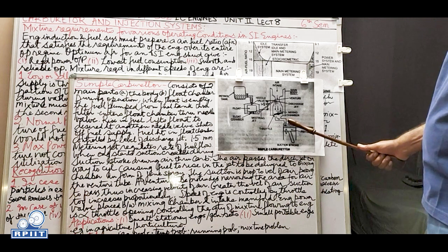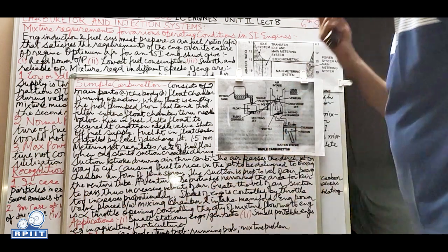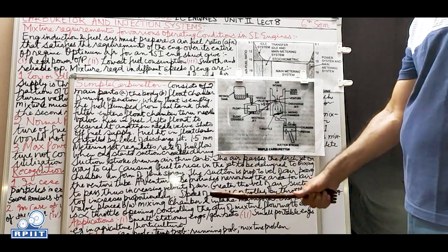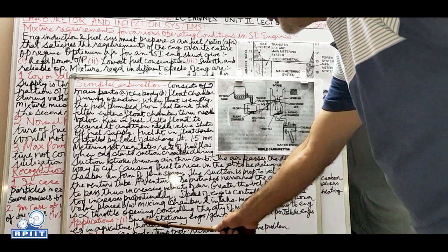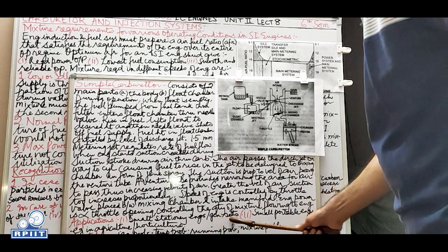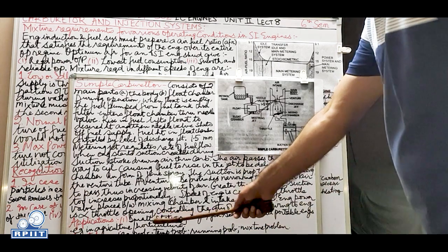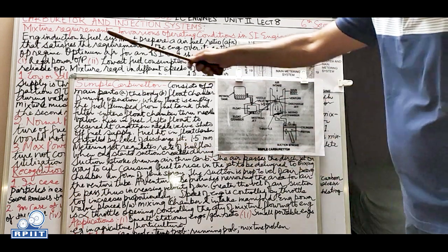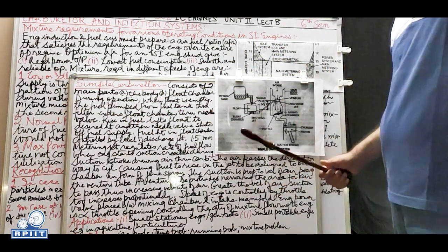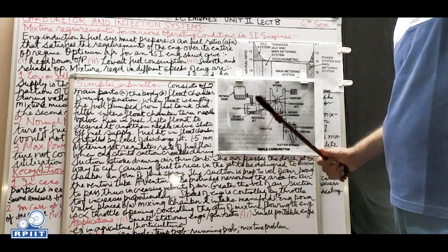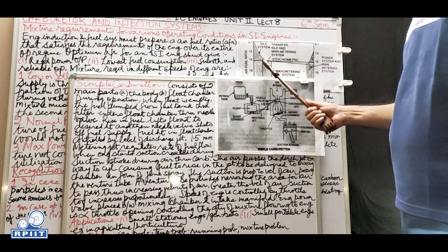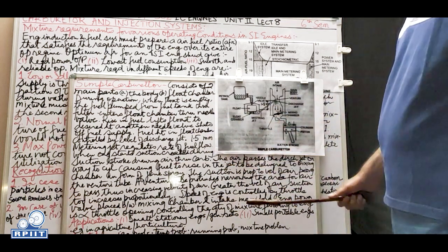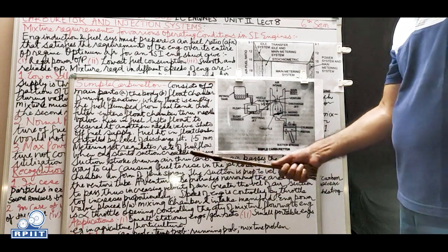The simple carburetor concept is now complete. Applications are in small stationary engines, small generating sets, and small portable engines used in agriculture and horticulture where engine speed is generally constant. It works best at one particular engine speed, probably stoichiometric at 14.6:1. These limitations mean it is only used for the few stationary engine cases mentioned.